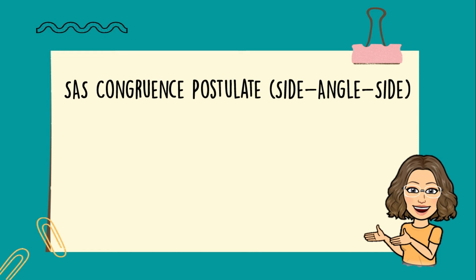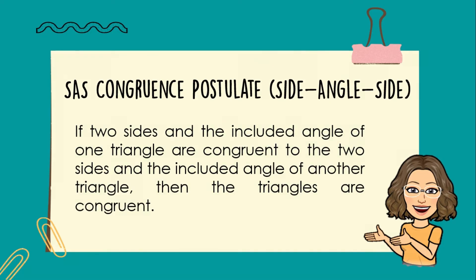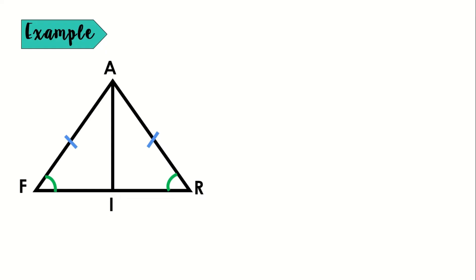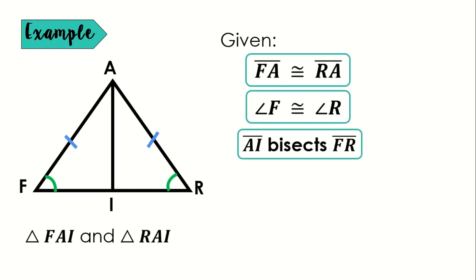Now, let's have the first congruence postulate: the SAS or Side-Angle-Side Congruence Postulate. This states that if two sides and the included angle of one triangle are congruent to the two sides and the included angle of another triangle, then the triangles are congruent. Let's have an example. We have triangle FAI and triangle RAI, with the following given statements. For the first given, FA is congruent to RA — you can see that these two sides are marked identically on the figure. This is our first pair of congruent parts.